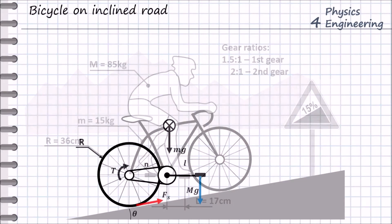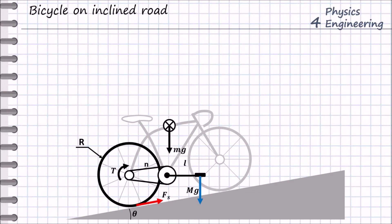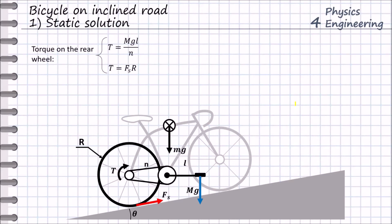In order to solve this problem, we use the following model with the forces and torques as shown in the picture. The first solution method is in the static condition. At the beginning we find the torque on the rear wheel, and then we find the stiction force between the wheel and the road. Then we define the system coordinate as shown in the picture.